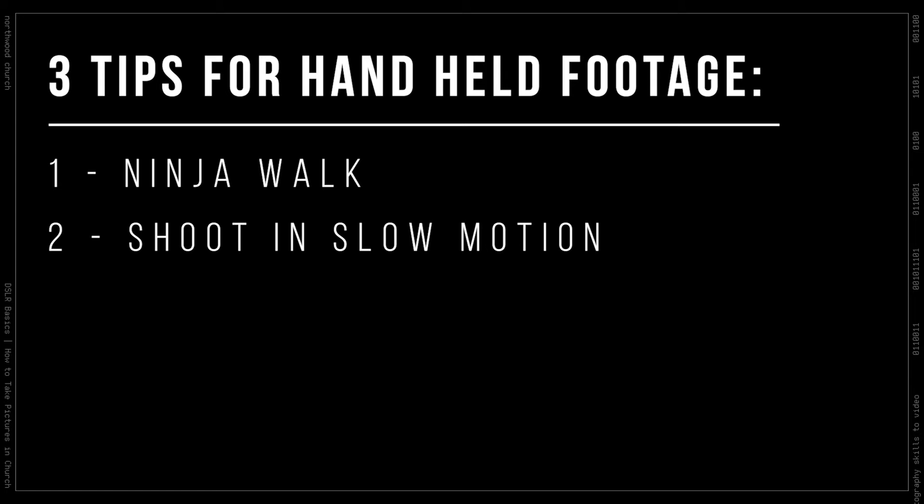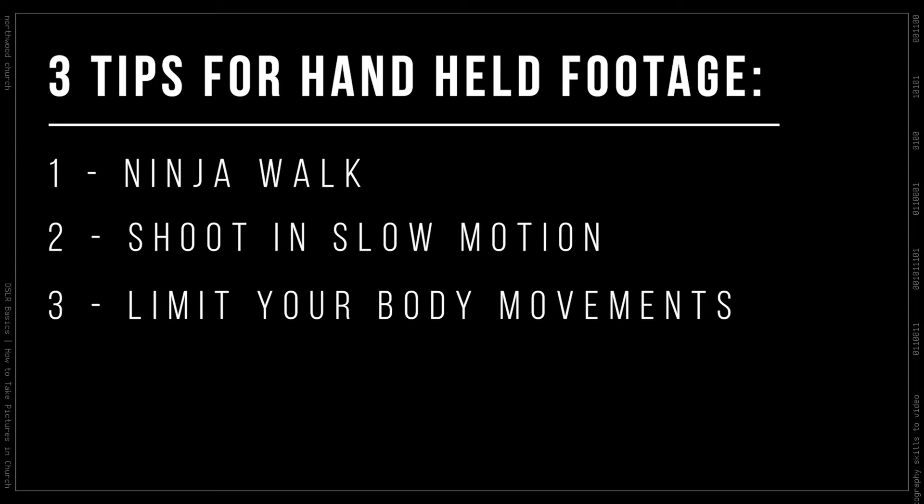Number one: learn to ninja walk. This is a real thing that camera operators do. When you walk normally with a camera, you can see every step, but when you walk with your knees bent and your feet landing heel-toe, it reduces that greatly. Number two is to shoot slow motion — every little micro jitter gets slowed down, so the video looks more professional. And number three: limit your movements. Instead of walking a move, try putting your feet a little more than shoulder-width apart and track from left to right without taking a step. You can do similar things going forward and backwards as well.